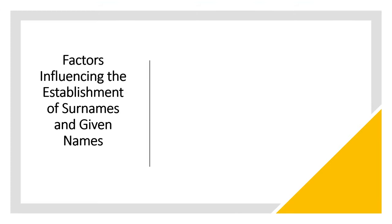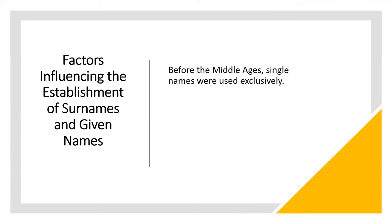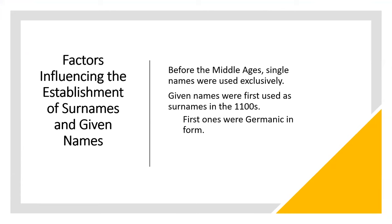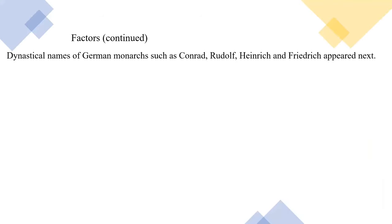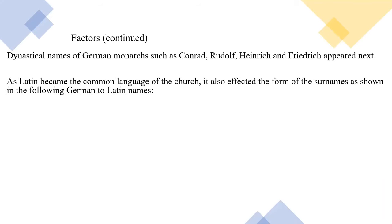People often want to know where their surname came from, why certain given names were chosen, and why they were often passed on generation after generation. Before the Middle Ages, single names were used exclusively. Often a second given name or nickname was added to differentiate between individuals with the same given name, and these were later used as surnames. Given names were first used as surnames in the 1100s — the first ones were Germanic in form. Later, Christian names were introduced. Other factors included dynastical names of German monarchs such as Konrad, Rudolf, Heinrich, and Friedrich. As Latin became the common language of the church, it also affected the form of surnames.